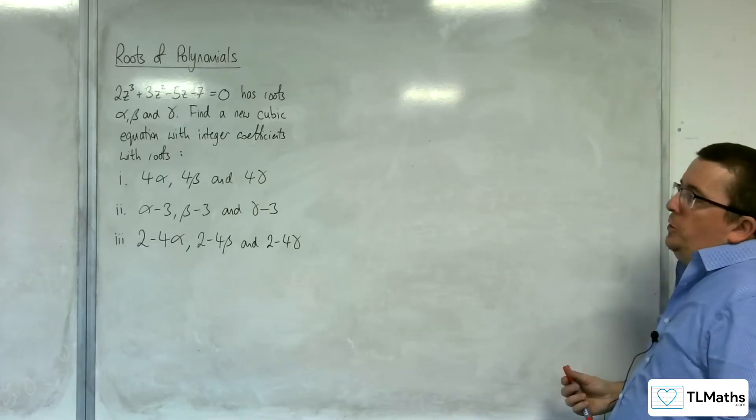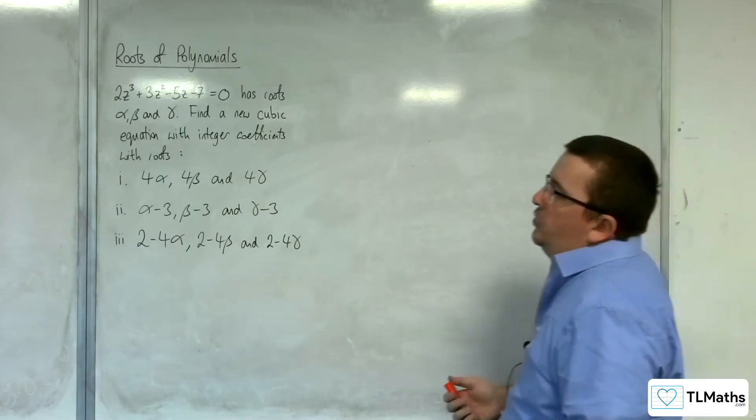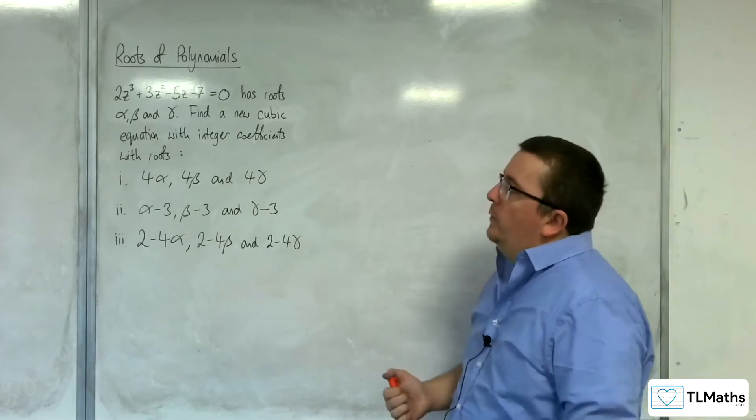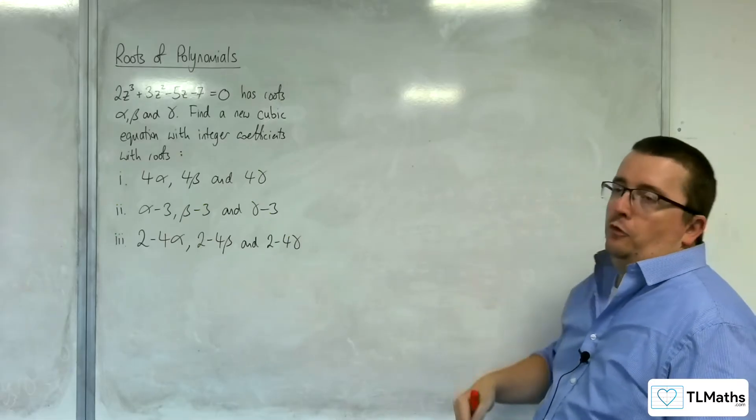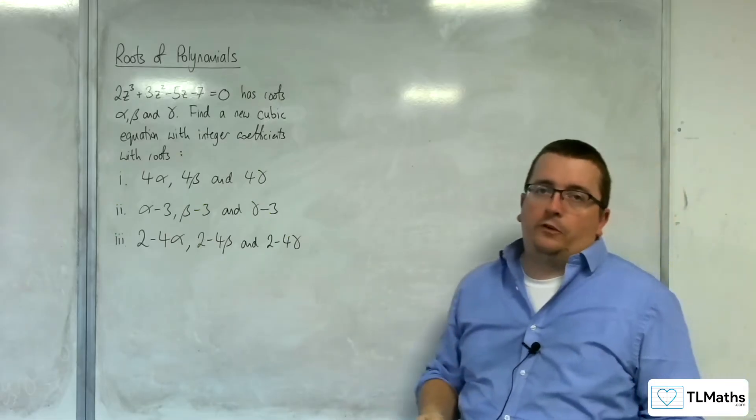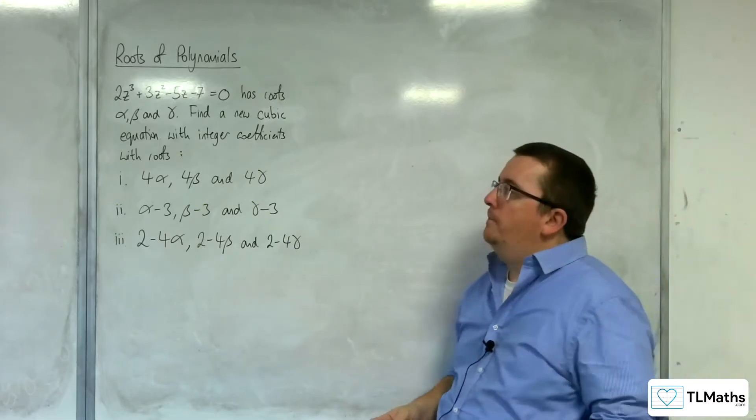Find a new cubic equation with integer coefficients with roots 4 alpha, 4 beta, and 4 gamma for the first one.